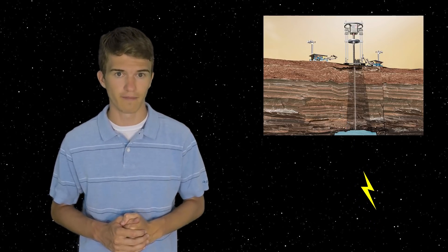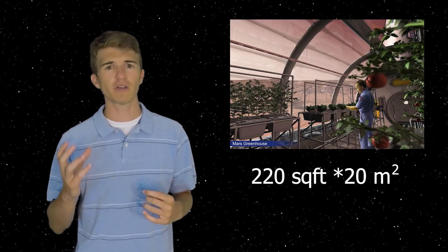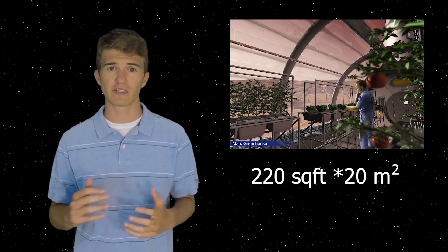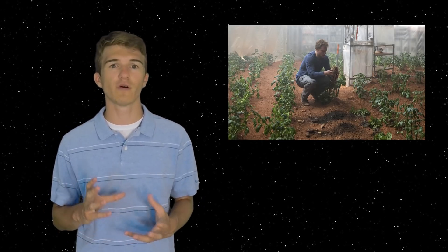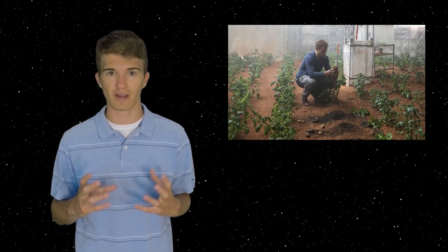So ecopiesis would take a combination of energy and space. It would take about 220 square feet of space in order to keep one astronaut alive. However, the energy costs would also go up, mainly because we would have to pressurize that area as well as keep the temperatures at a range that they could exist.